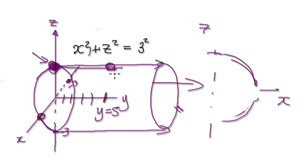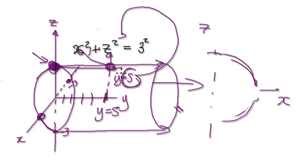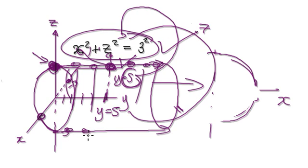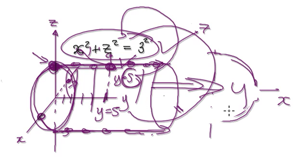If you put this point's X and Z values into the equation, Y is not there, so this point will always be satisfied. No matter where Y is, putting Y into the equation makes no difference — this will always be satisfied. So anything along here will be satisfied. In short, you've got yourself a cylinder being dragged in the Y direction.